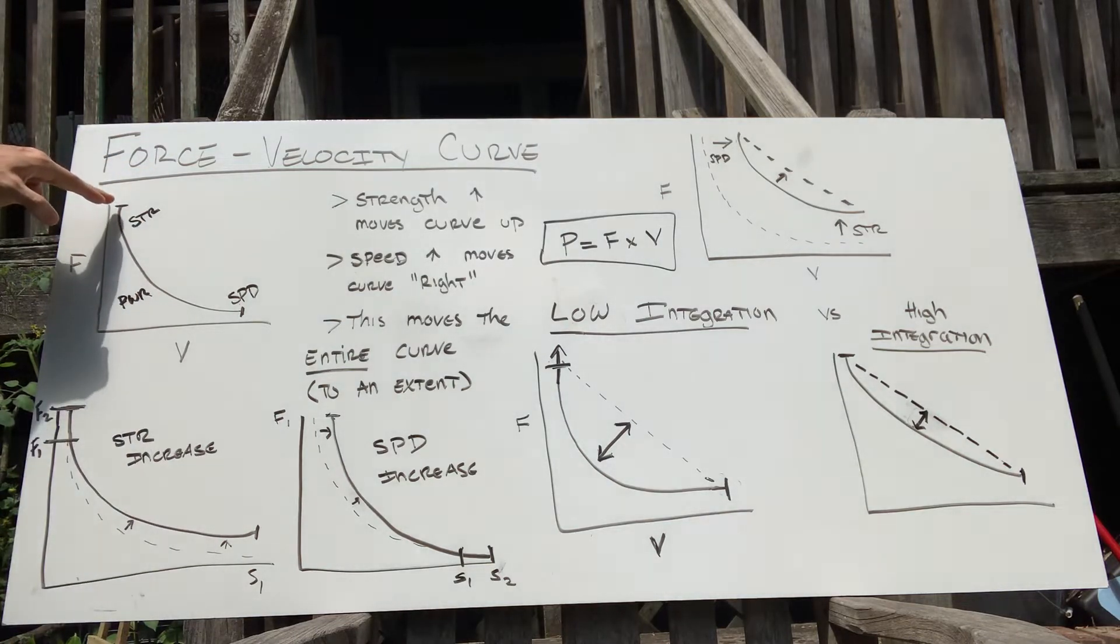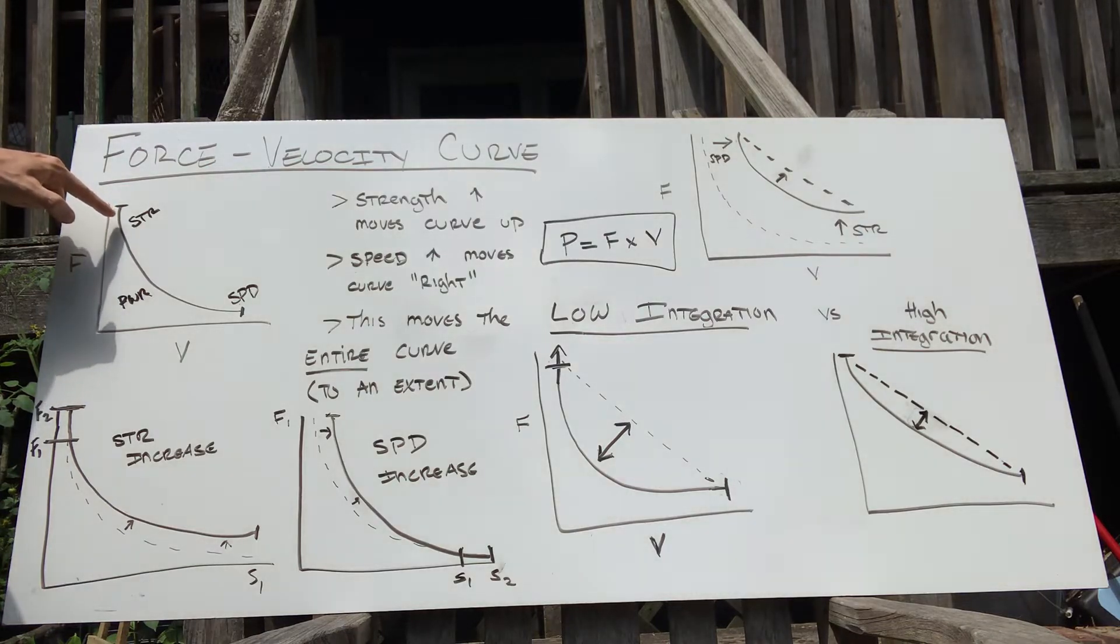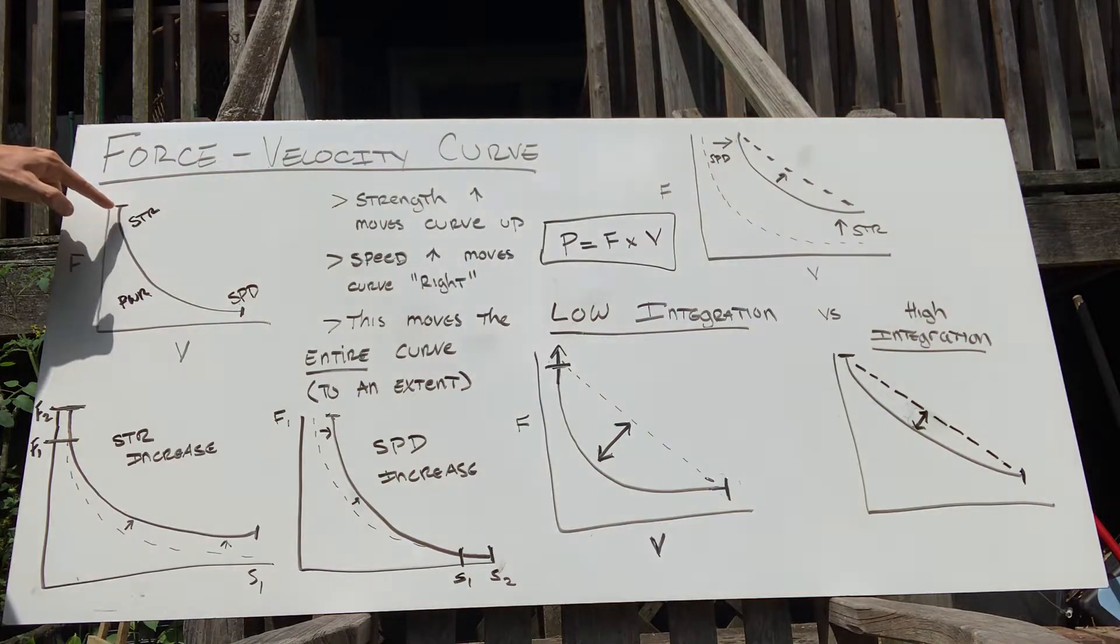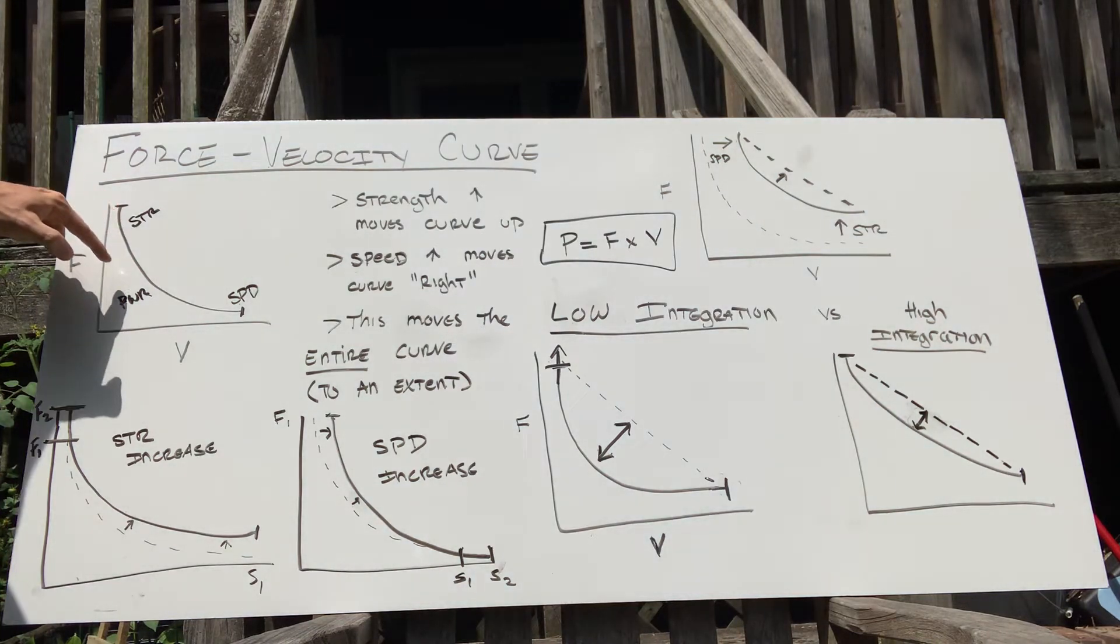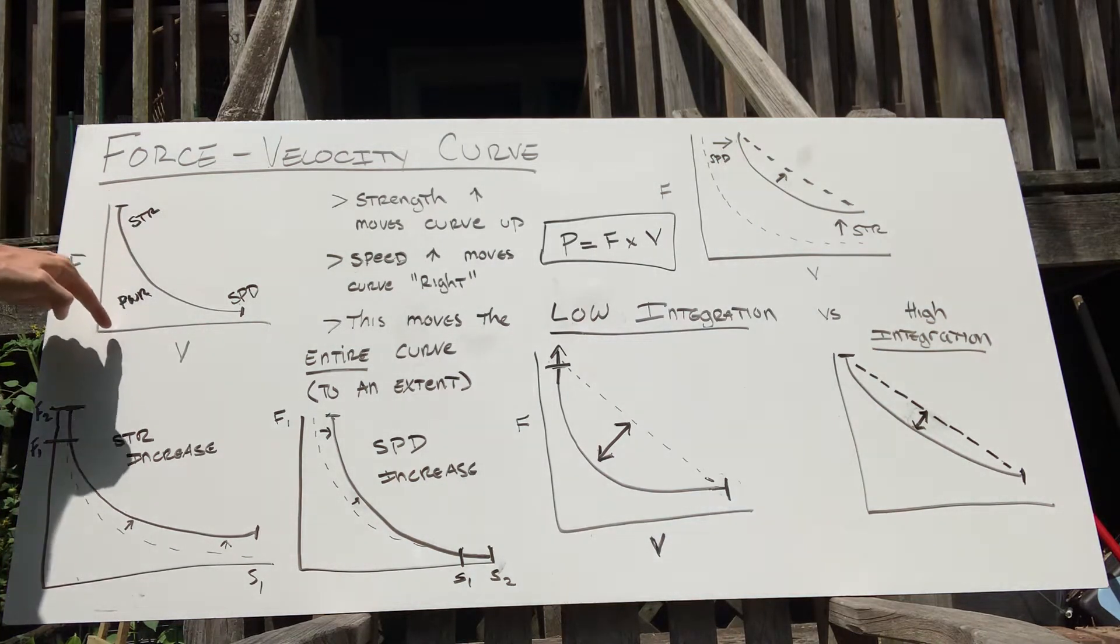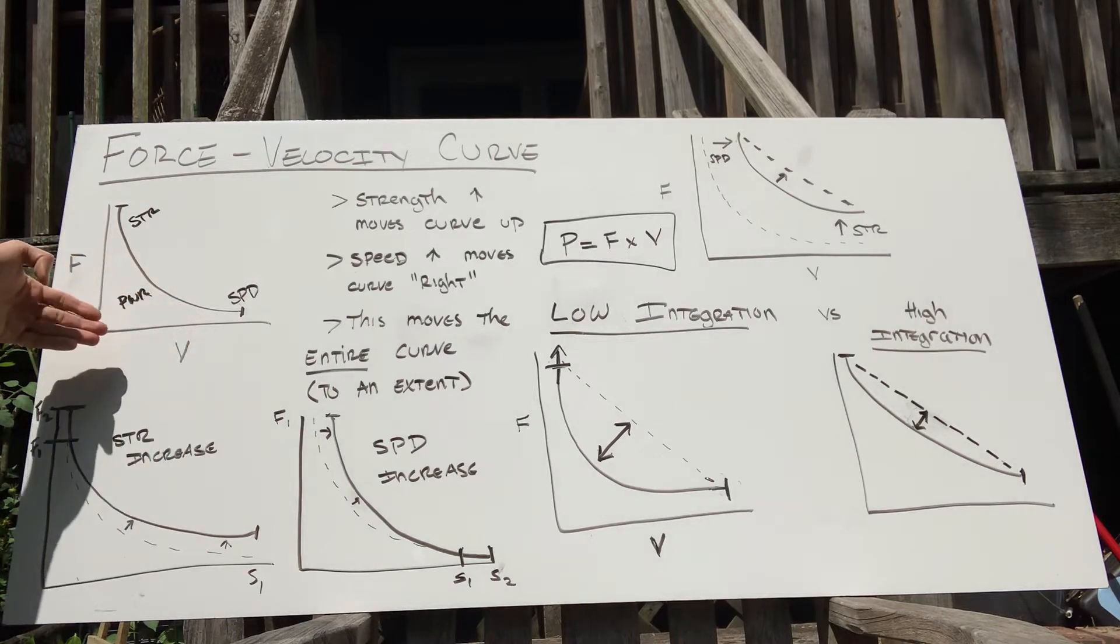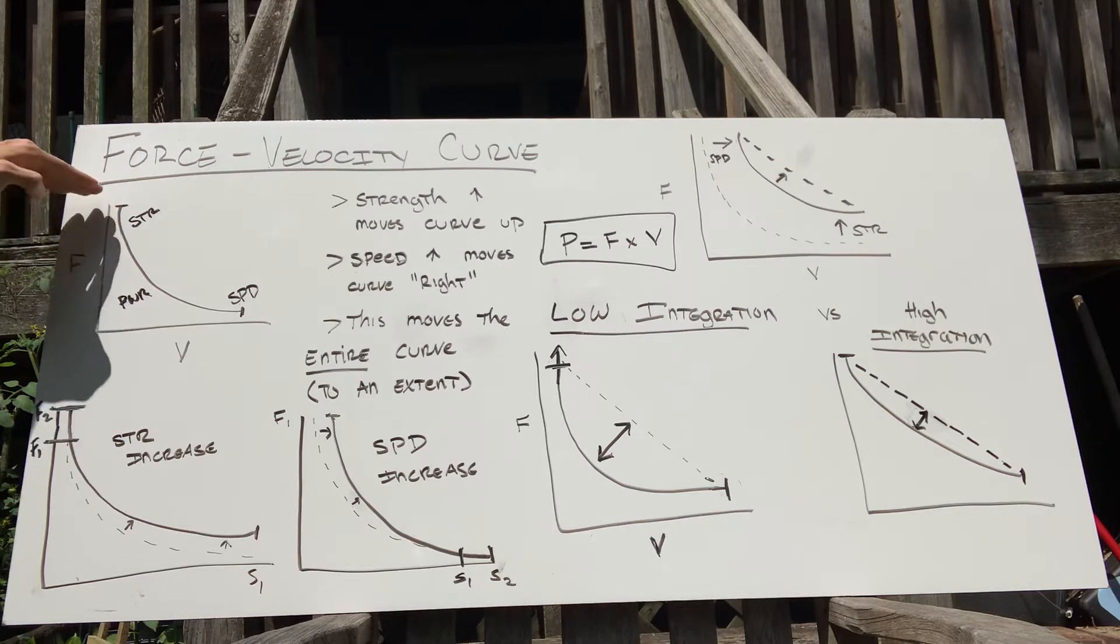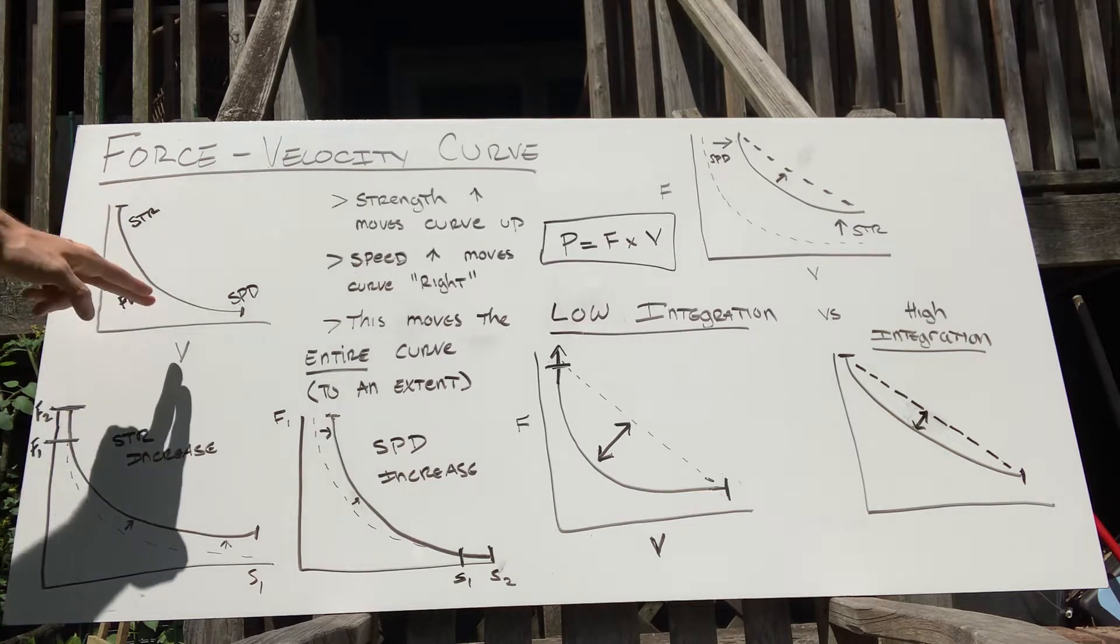In theory, let's say you're exerting maximal strength doing a barbell back squat for the heaviest rep possible. At a one rep max, you're moving very slowly because relative to this line you're very far to the left, so you're not moving very quickly. But you are exerting a lot of force—force is very high.